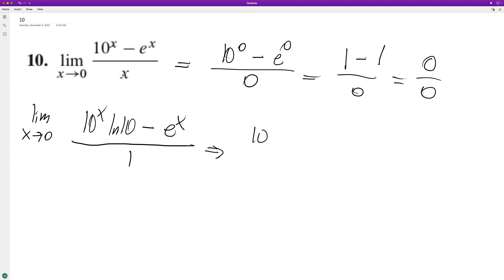So we plug in zero, we get 10 raised to the zero times natural log of 10 minus e raised to the zero all over one. So ultimately we end up with natural log of 10 minus one because e raised to the zero is one. And that's it.